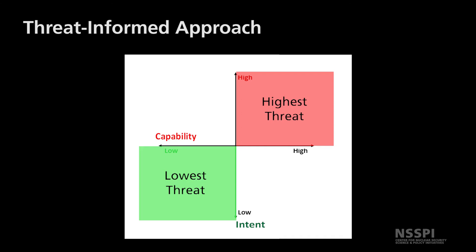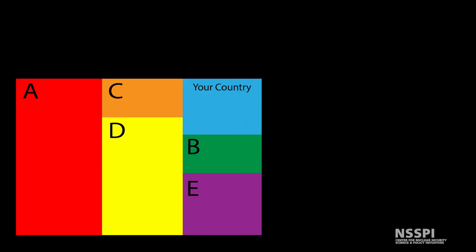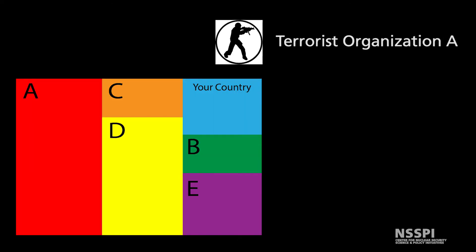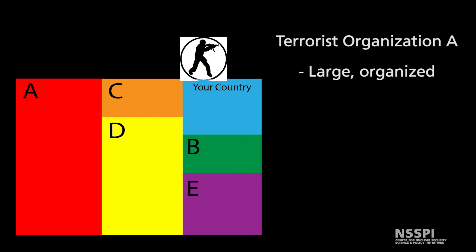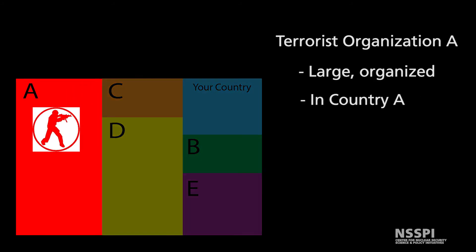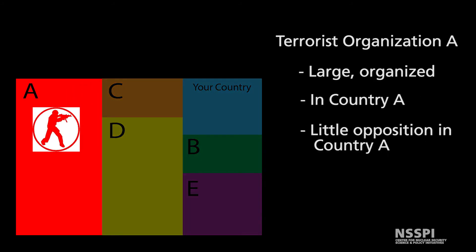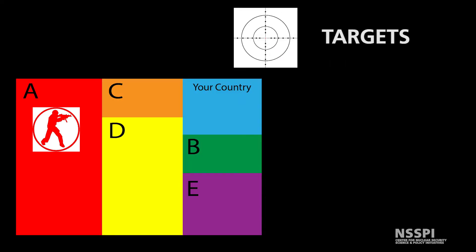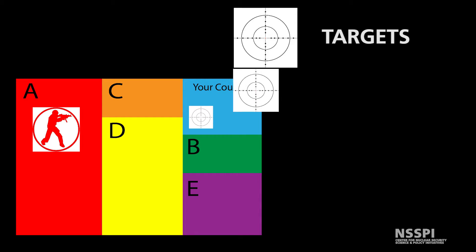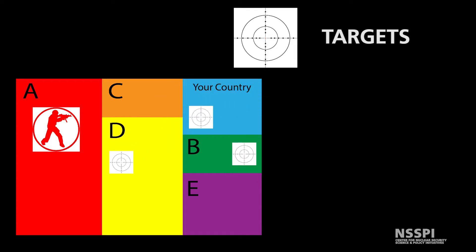We can go over an example. We are looking at a hypothetical terrorist organization — a large, organized terrorist organization concentrated in country A, with little opposition from the domestic government. There are several targets: your country is one target, country B, country D, and personnel and businesses from targets located in country A.